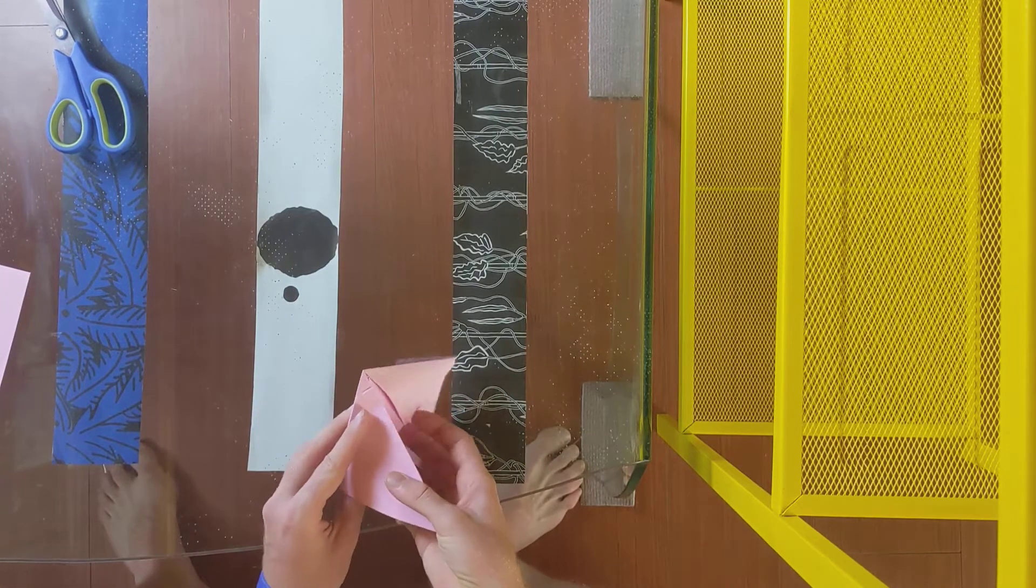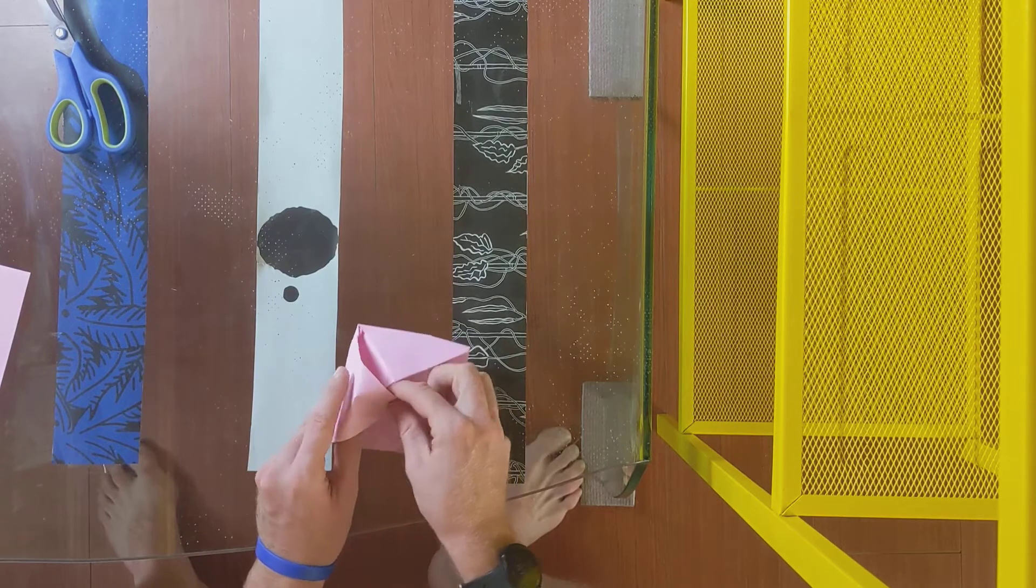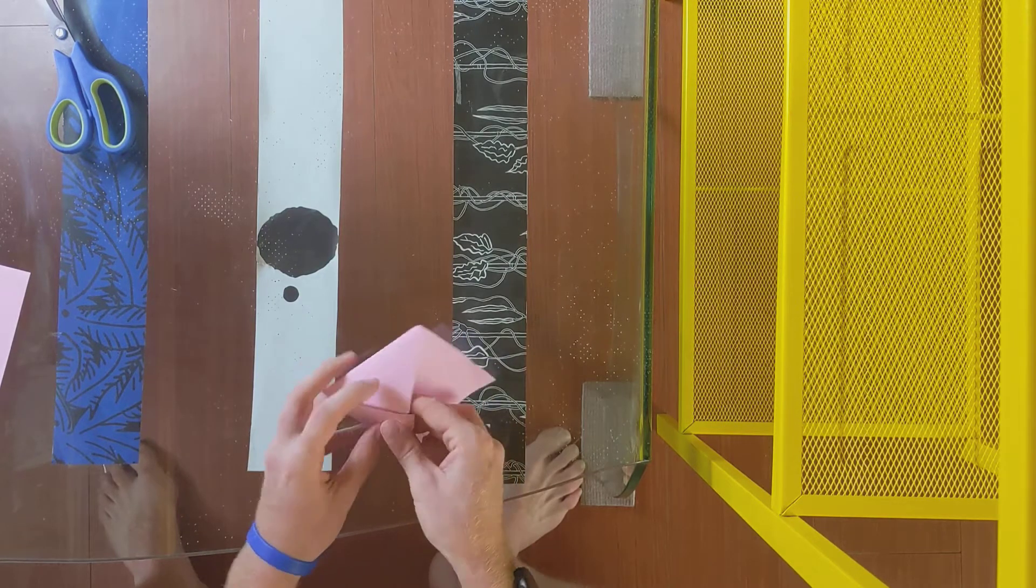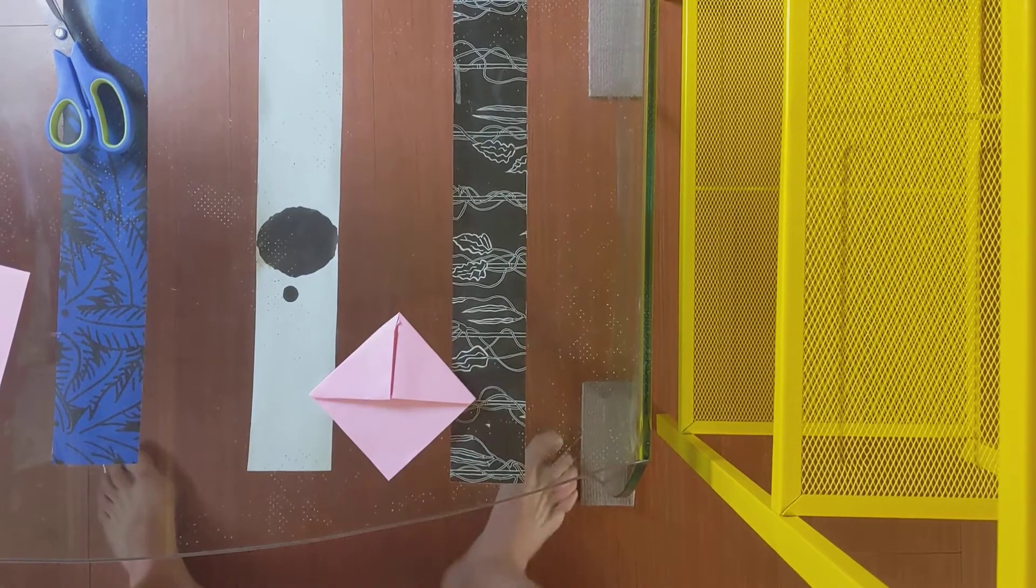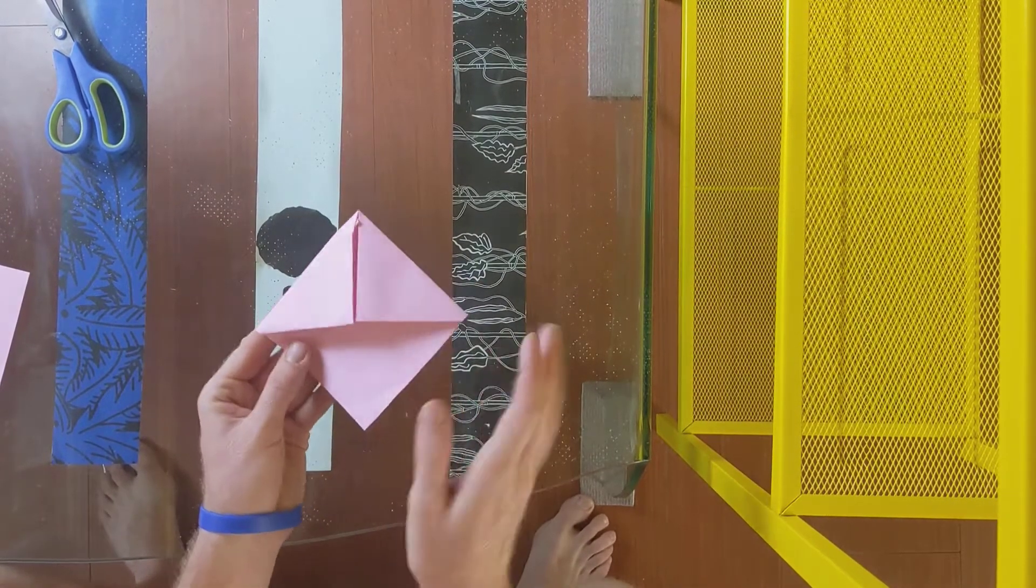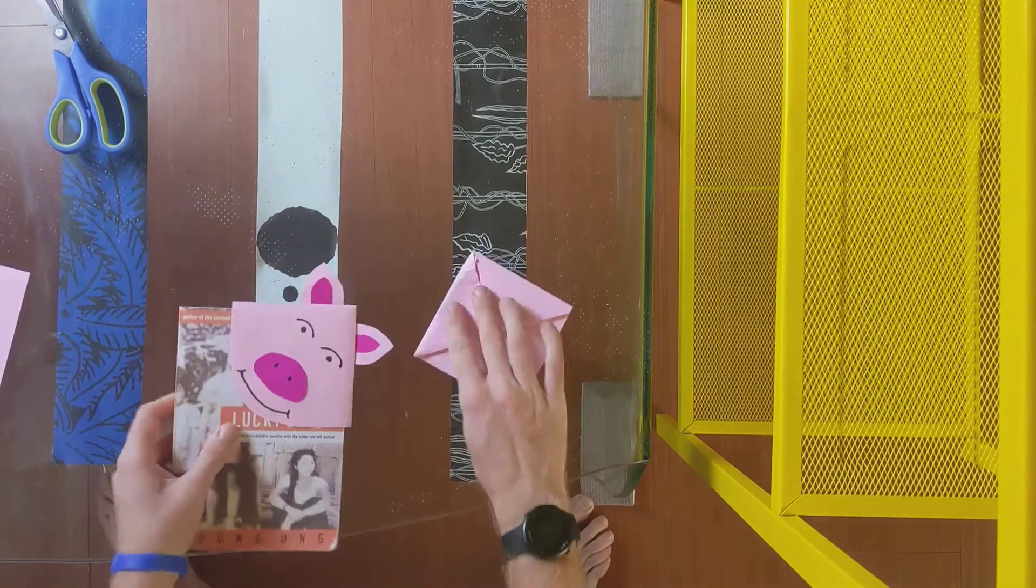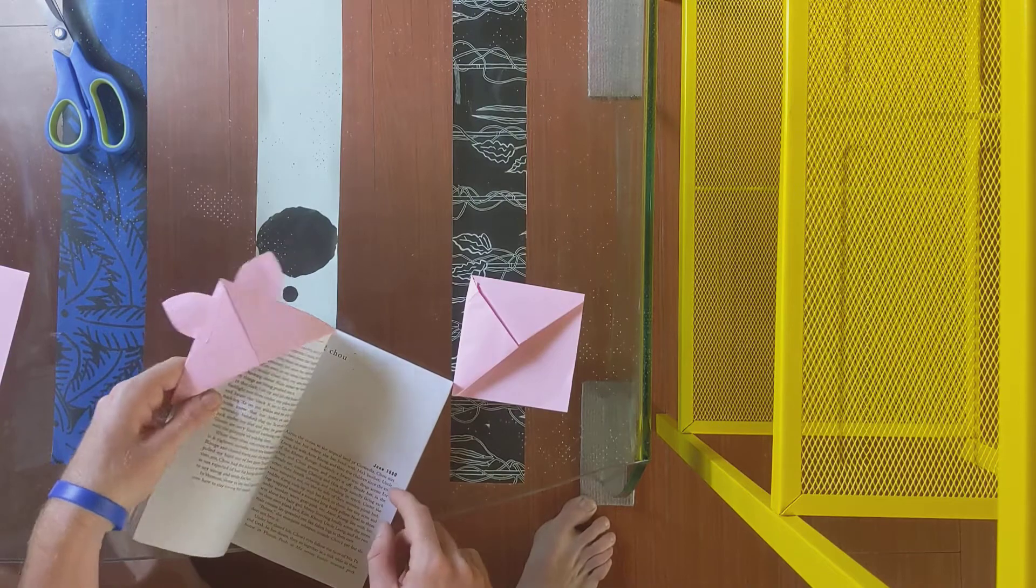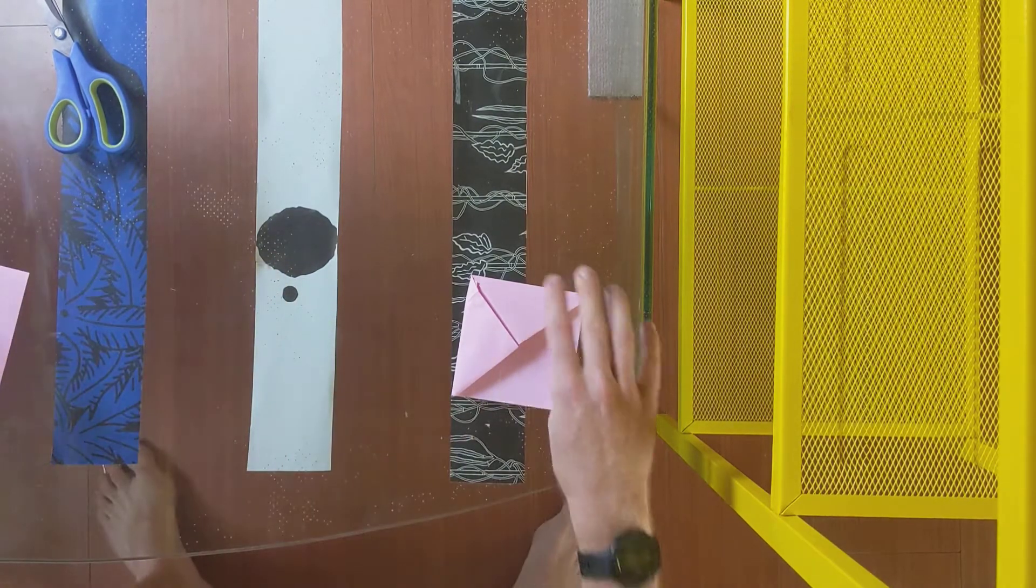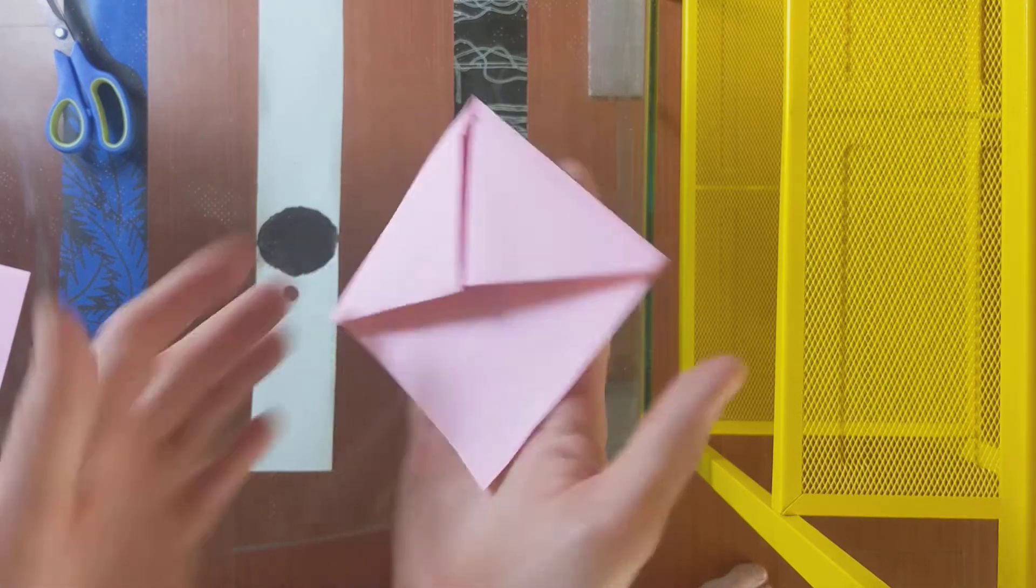And fold. And then you will bring this part and tuck it under one more time just like we did on the other side. And then push down and fold. It is okay if this side is a little bit messy because we are going to turn it over anyway. This side is the back that you won't really see.